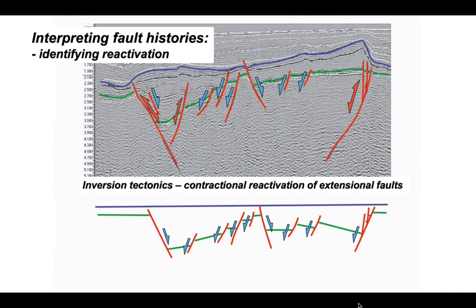This style of deformation is called inversion tectonics, the contractional reactivation of extensional faults. These contractional processes are classically heterogeneous within sedimentary basins. Not all faults reactivate. The key thing we've done to visualize this evolution is to make this little cartoon restoration, which is a critical step in the interpretation workflow. It shows roughly what the original rift basin looked like before it was compressed and inverted.